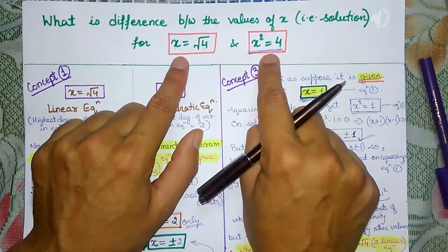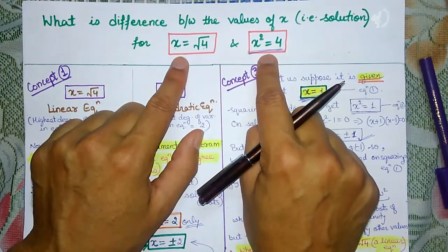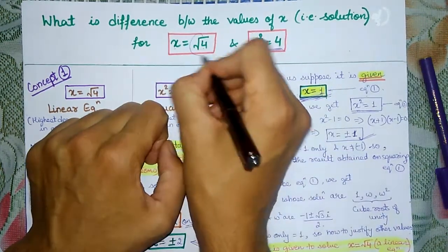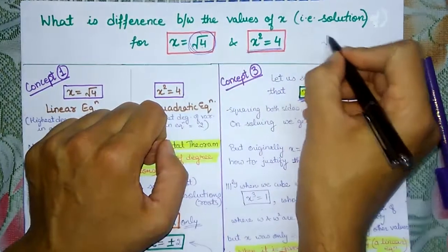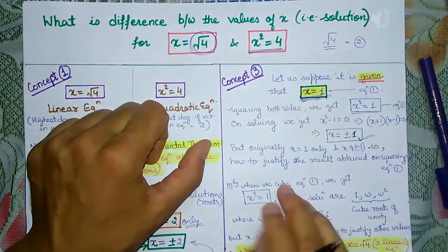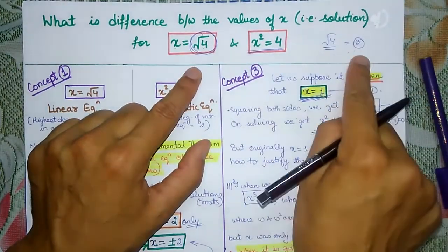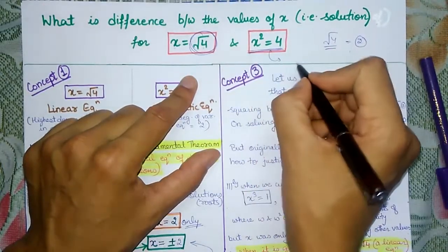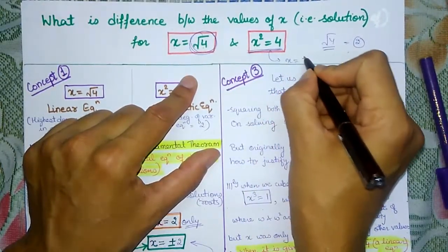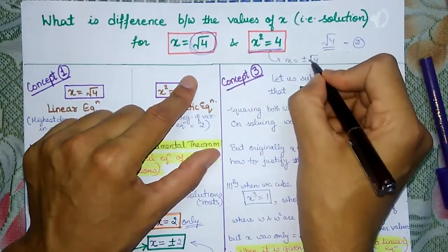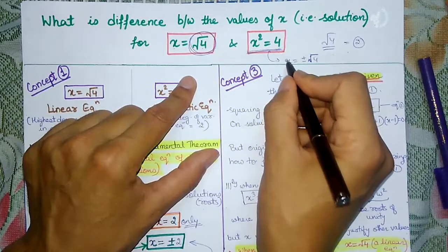When you have to write the value with both signs, you write x is equal to plus minus root 4. This gives x is equal to plus minus 2.